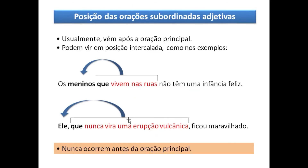Como funciona isso? 'Os meninos que vivem nas ruas não têm uma infância feliz.' Aqui eu teria duas orações, com dois verbos: 'vivem' e 'têm'. A oração principal seria: 'Os meninos não têm uma infância feliz.' E a oração subordinada adjetiva: 'Os meninos vivem nas ruas.' Esse 'que' retoma 'os meninos'. Então eu tenho uma segunda oração no meio da primeira — intercalada.